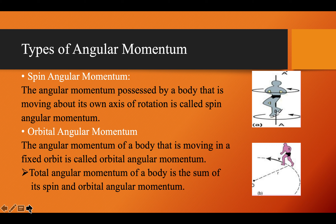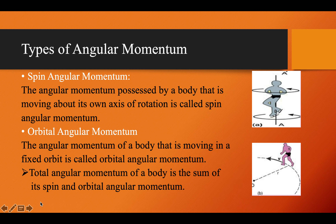The angular momentum possessed by a body moving about its own axis of rotation is called spin angular momentum — for example, a person rotating in place completes rotations about their own axis, and that momentum is spin angular momentum. The angular momentum of a body moving in a fixed orbit is called orbital angular momentum — for example, a person moving along a track around a central point. The total angular momentum of a body is the sum of its spin and orbital angular momentum.